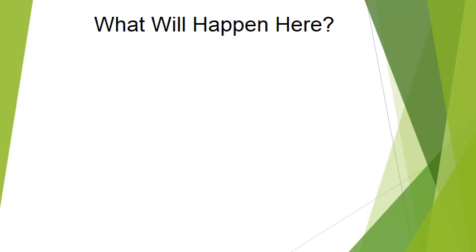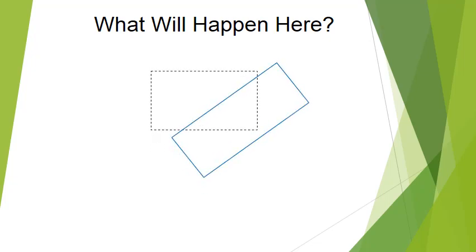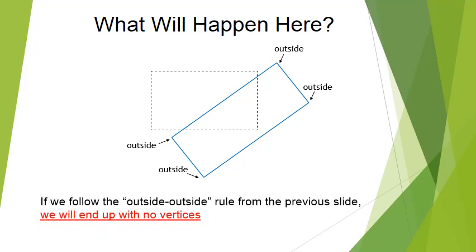Let's see a case which fails with the theory we just showed. Consider this polygon where all the vertices are outside. If we follow what we saw in the former slide — if both adjacent vertices are outside, we save nothing — then for each pair of adjacent vertices, we end up with no vertex at all. If we have no vertex, we have no polygon. So we need to fix something here.